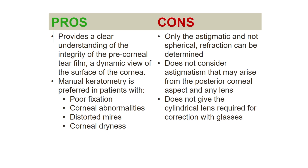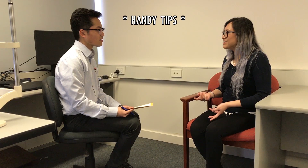In manual keratometry such as the Bosch and Loam, it provides a clear understanding of the integrity of the pre-corneal tear film and a dynamic view of the surface of the cornea. It also gives direct visualisation of the reflections generated by the tear film. You can recognise areas of corneal surface irregularity or compromise. If the tear film is oily, disrupted, or the cornea has subtle dystrophy or degeneration, it will be reflected in the quality of the measurements.